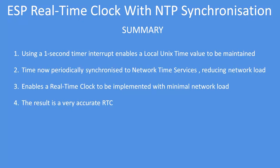In conclusion, this is one method of implementing a real-time clock in software. It uses a one-second timer interrupt to keep a local Unix time in synchronization with an NTP time server — a periodic synchronization that reduces network load. It enables you to implement a real-time clock with minimal network loading, and the result is a very accurate real-time clock. You only need to periodically use the Wi-Fi network to get a time update.